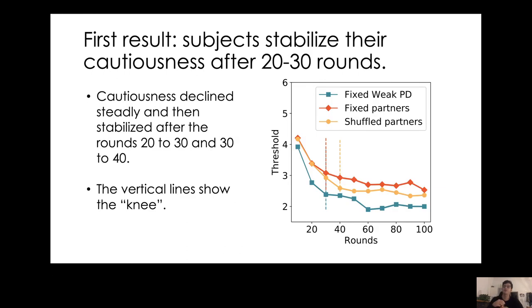To answer the first question, how long does it take to learn a game? It takes around 20 to 30 rounds. We know this because we look at cautiousness over time and see where the curve stops declining steadily and reaches a plateau, shown by the vertical line.